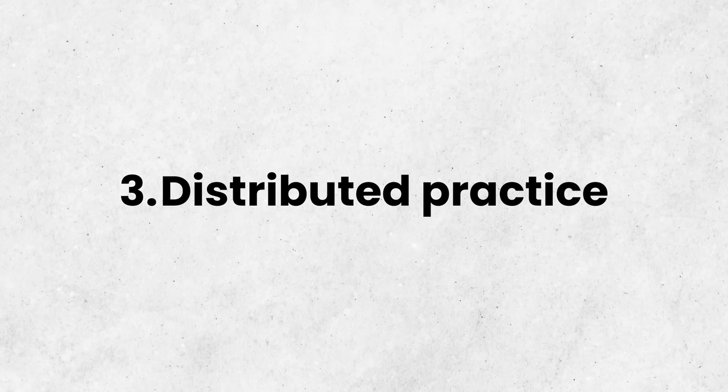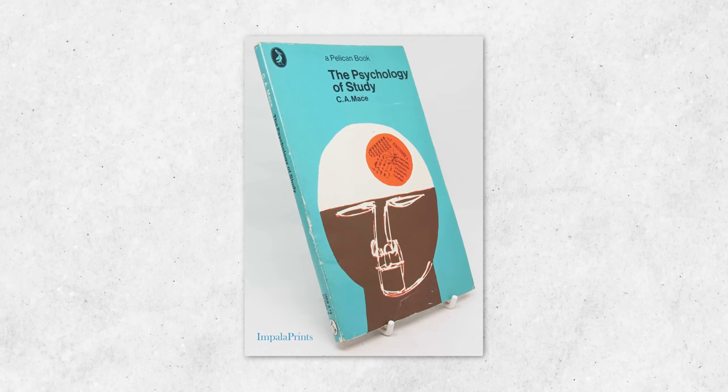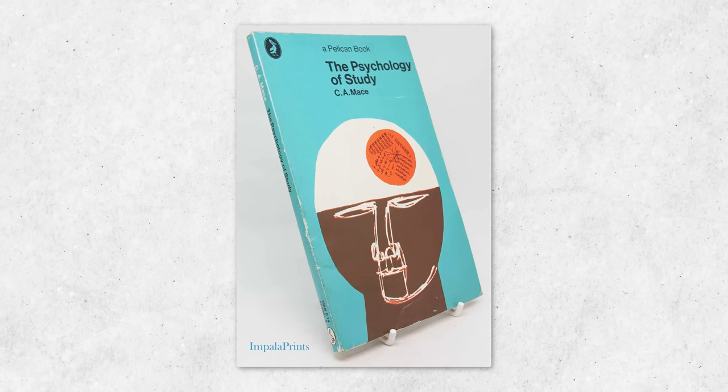One of the most efficient ways of learning is utilizing distributed practice, which basically means spacing out your learning over several short periods—say over several days or even weeks. An example is studying for just 30 minutes on each class every day, which helps you process the information on a deeper level and also helps with information recall. This isn't a new concept—it was first proposed in the book Psychology of Study in 1932 by Professor Cecil Mace.